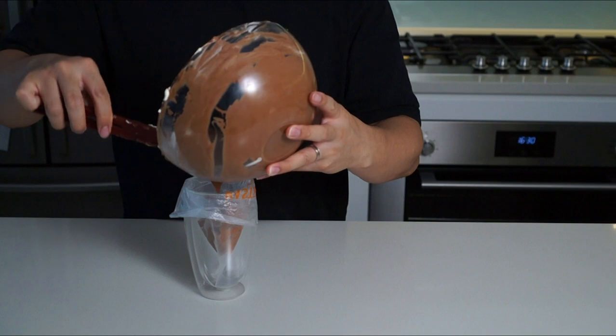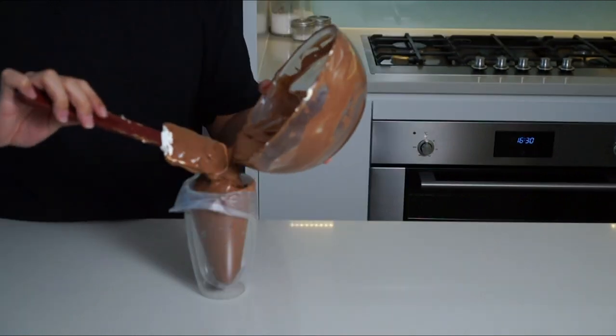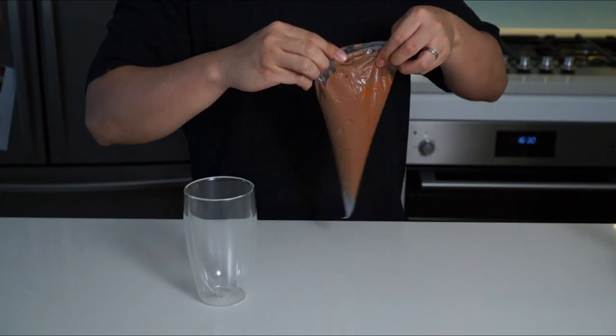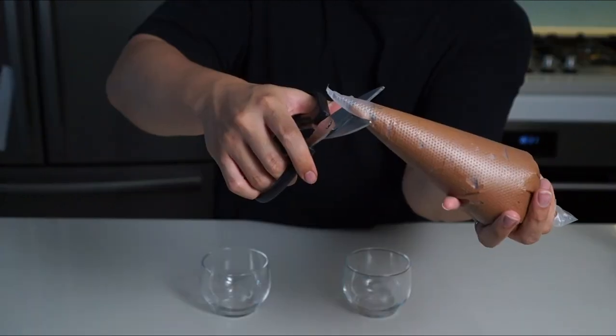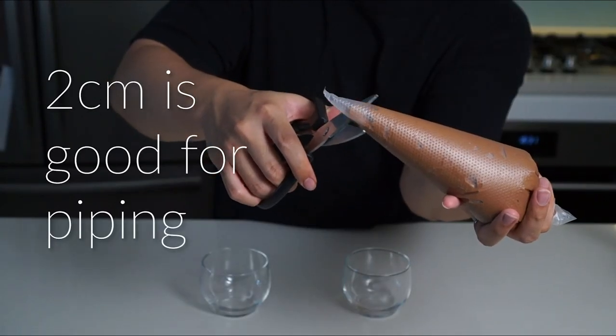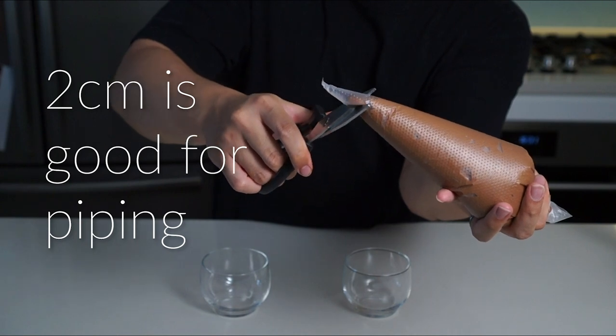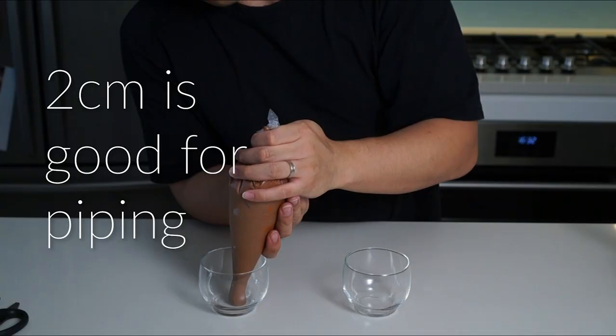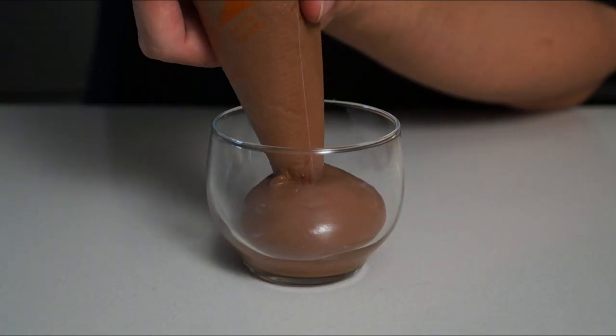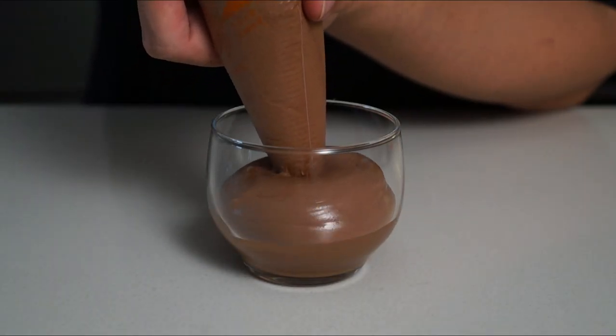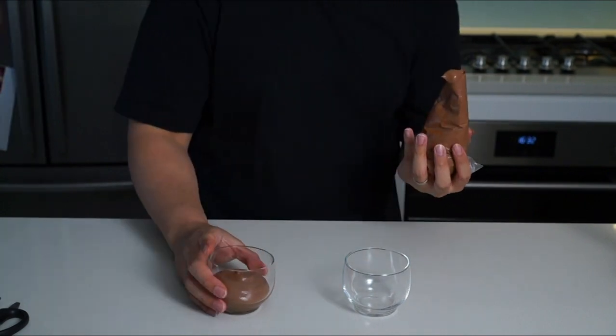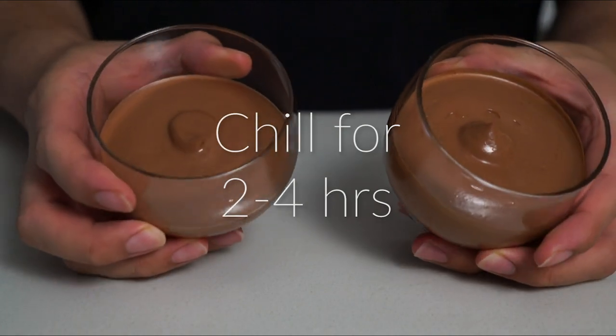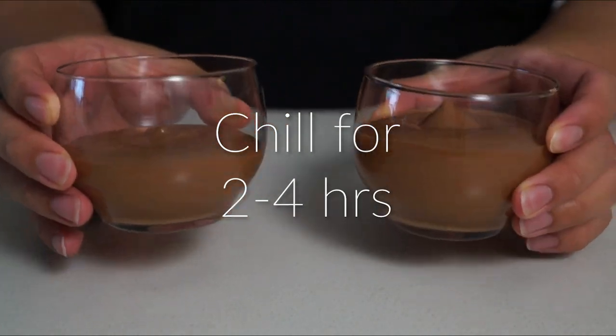So all that's left to do is to transfer this to a piping bag. Try not to overfill it like I did or else it'll be difficult to close. You want to cut about a two centimeter hole. You want it large enough to not affect the texture of the mousse. We just pipe it into our little mousse cups. If you want a flat surface, you could give it a little shake and a few taps on the table which should flatten it out. Once you've piped your mousse cups, you want to leave these to set in the fridge for two to four hours.